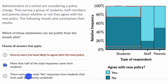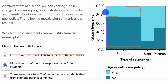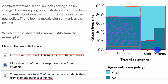Last but not least: there were more total "no" responses from students than from staff and parents combined. The no responses for students — that darker blue color — is this area right over here. And then the no responses from staff and parents combined is this area right over here. It does look like indeed the total no responses from students is much larger than the combined area for staff and parents. So I like this choice as well.